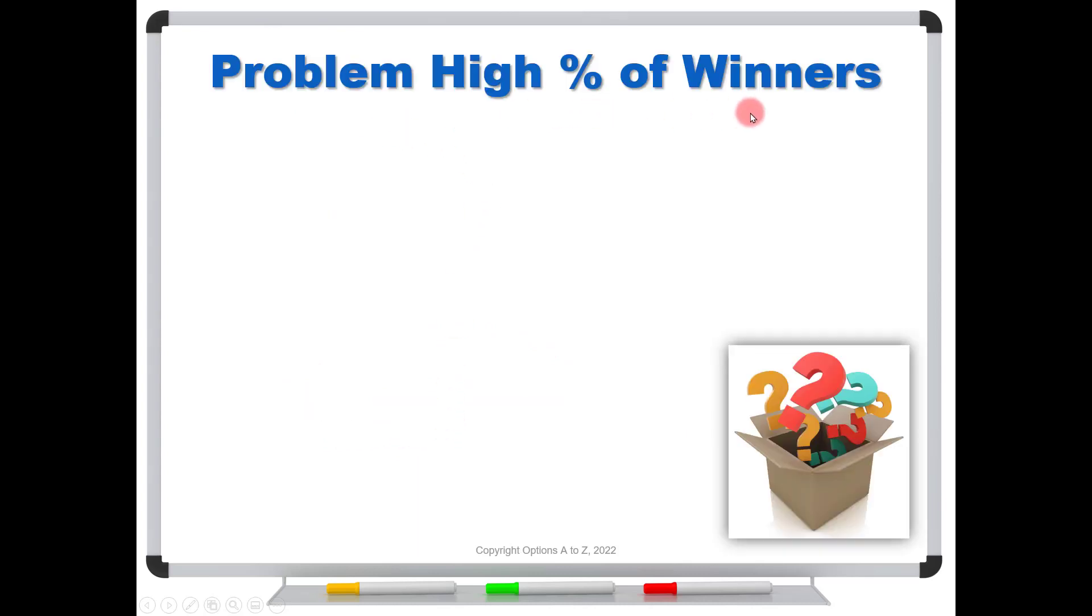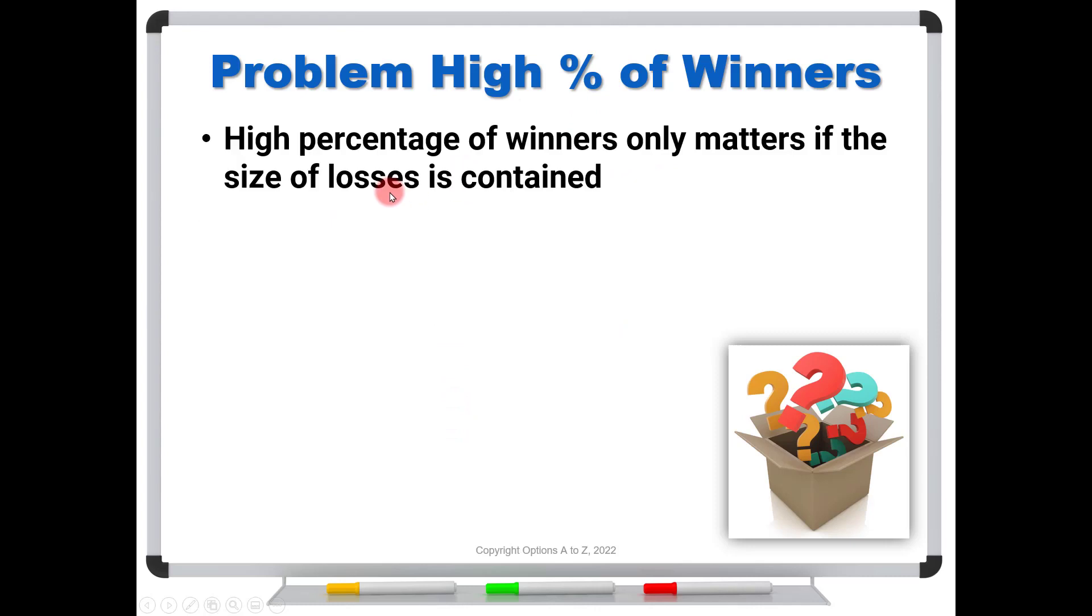So the problem with the high percentage of winners is that high percentage of winners only matters if the size of the losses is contained. See, if you make this as your goal, I want to win 80% of my trades or 60 or 70, whatever percentage you pick, it's going to force you to take quick profits because that's your goal.